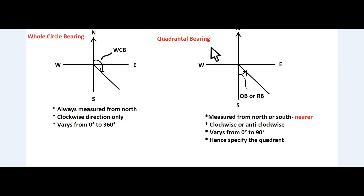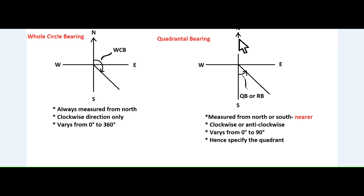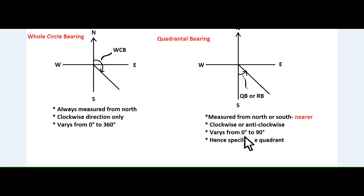In quadrantal bearing system, an angle is measured from magnetic north or magnetic south, whichever is nearer. If a line is laid in the 1st and 4th quadrant, the angle is measured from the north because north is much nearer to the line. If a line is laid in the 2nd and 3rd quadrant, the angle is measured from the south since the line is more nearer to the south than the north. Hence, in quadrantal bearing system, the angle is measured from 0 to 90 degrees only, and hence the quadrant should be specified.